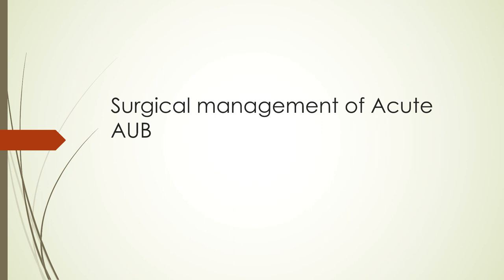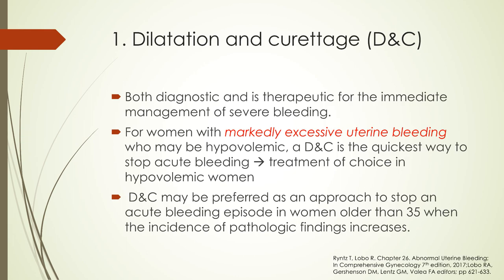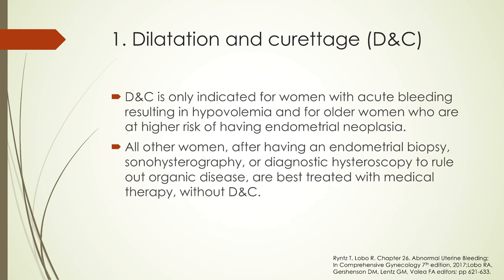For surgical management of acute AUB: first is dilatation and curettage or D&C, which is both diagnostic and therapeutic for the immediate management of severe bleeding. D&C is the quickest way to stop acute bleeding and is the treatment of choice in hypovolemic women. D&C may be preferred for women older than 35 in whom the incidence of pathologic findings increases. D&C is only indicated for women with acute bleeding resulting in hypovolemia, or for older women at higher risk of endometrial neoplasia. Other women, after endometrial biopsy, sonohysterography, or diagnostic hysteroscopy to rule out organic disease, are best treated with medical therapy without D&C.